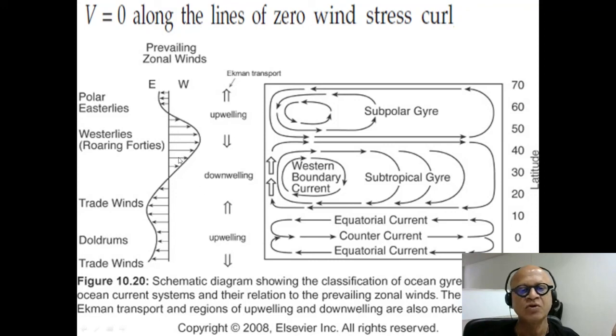With these simple wind distributions, prevailing zonal winds in the real world, which can be approximated this way, we end up getting the circulation, including the tropical cells on either side and the counter current.